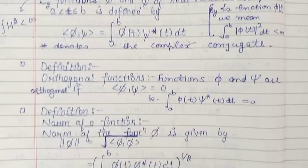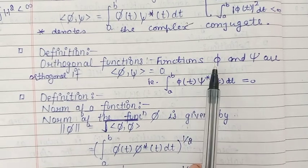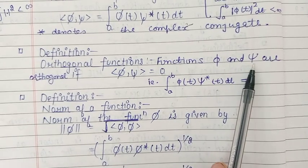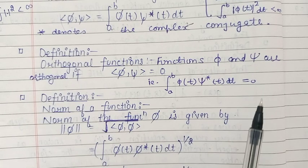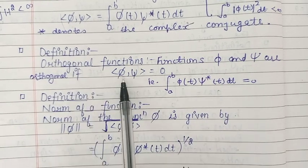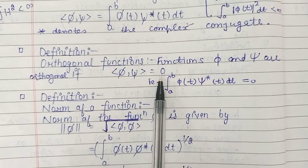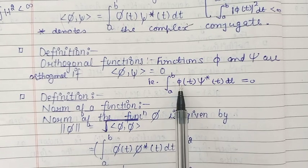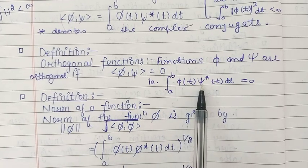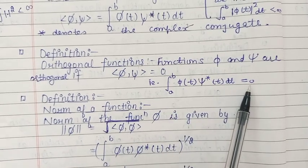Next, we define orthogonal functions. Two functions phi and chi are said to be orthogonal functions if the inner product of these two functions is zero — that is, the integral from a to b of phi(t) times chi*(t) dt equals zero.